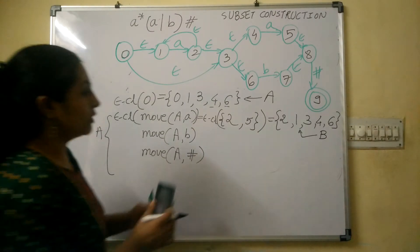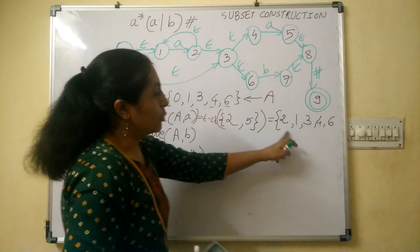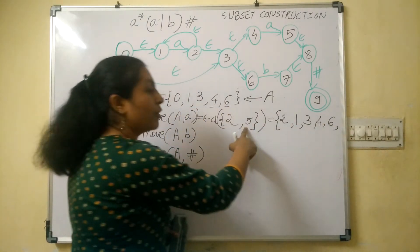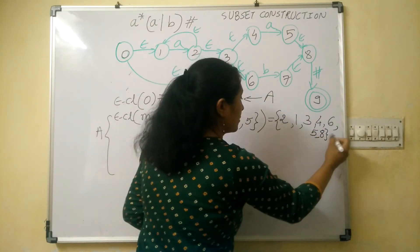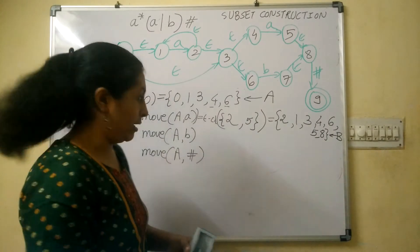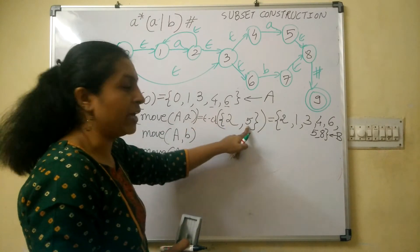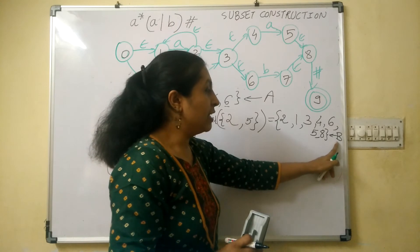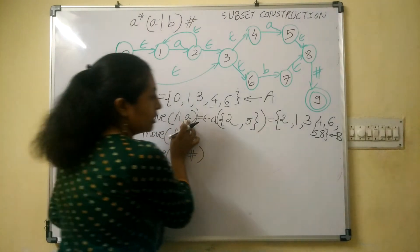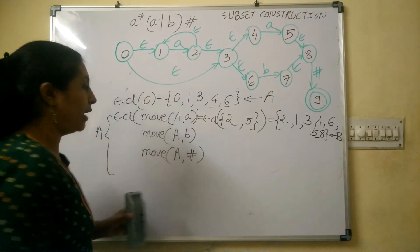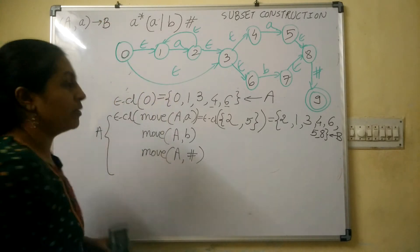We also include the states from 5: from state 5 we have a null transition to 8, so include 5 and then 8. So state B = {1, 2, 3, 4, 5, 6, 8}. This is a new state not equal to A, so we name it B. From state A on input symbol 'a' we are going to state B, so the DFA transition is: current state A, input 'a', new state B.